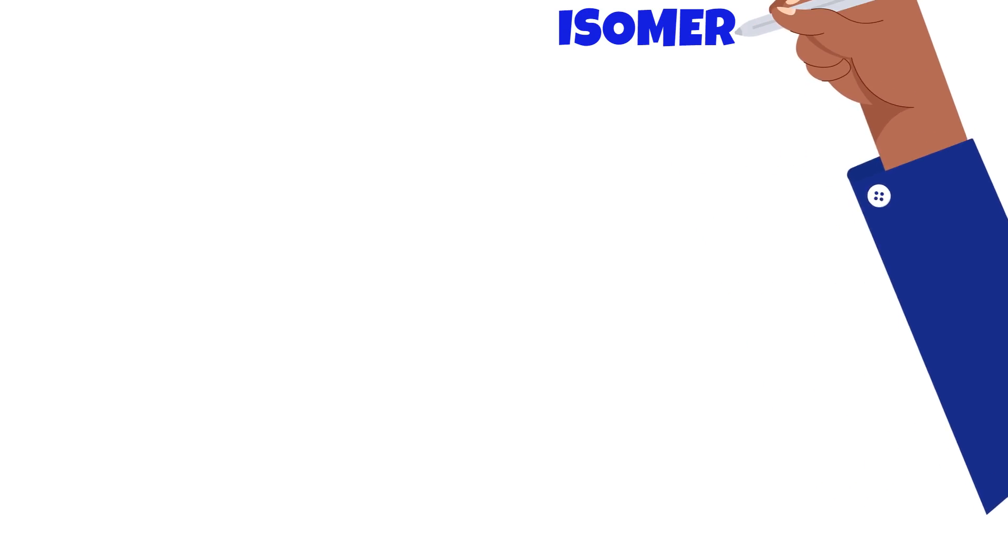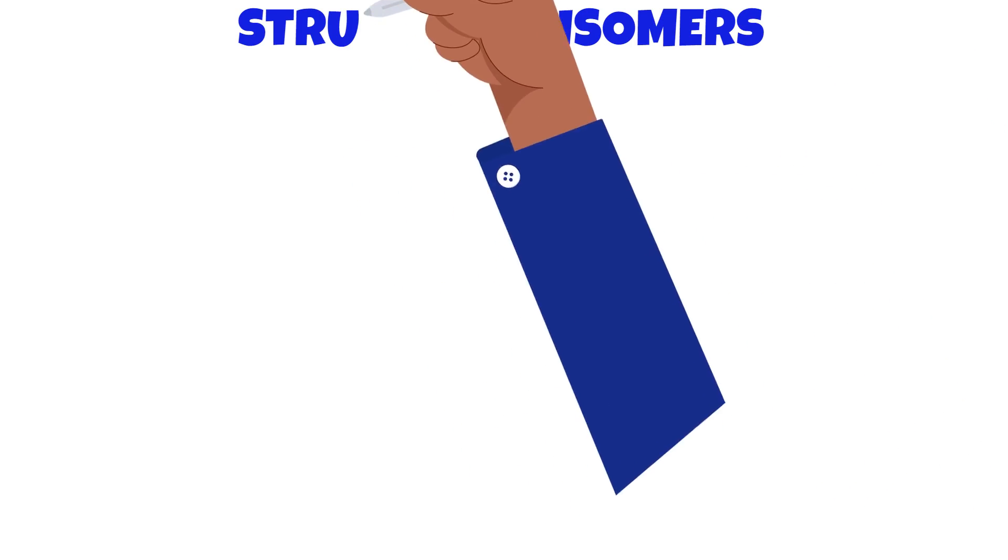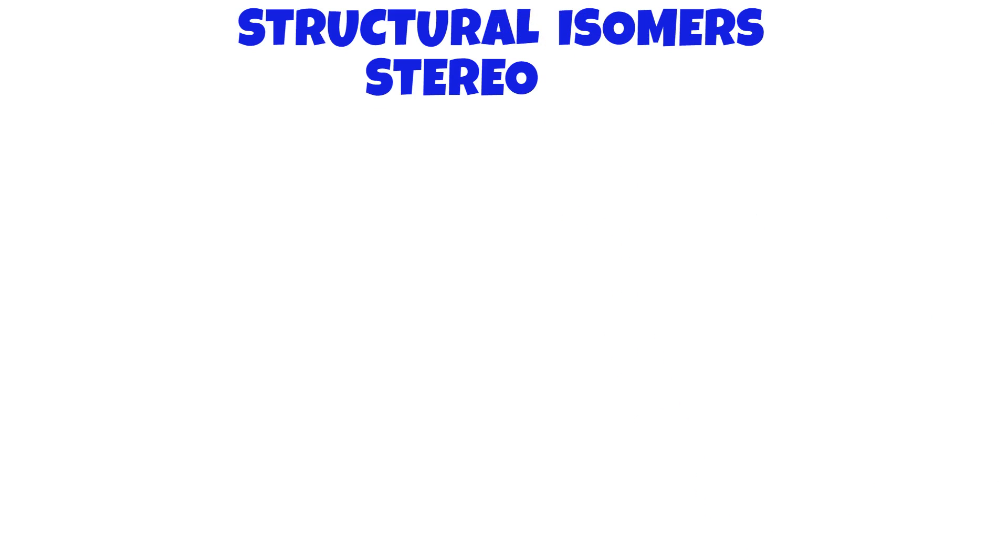Isomers is a vast topic. It can be split into two: structural isomers and stereoisomers. In this video, we will be talking about structural isomers, which is what is needed for your IGCSEs.